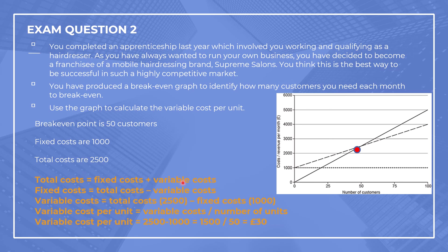We also know the number of units — 50 customers — because we need the variable cost per unit. Our variable cost per unit is going to be £1,500 divided by 50, which equals £30. So our variable cost per unit is £30. Take your time to look at this again until it starts to sink in and make sense.